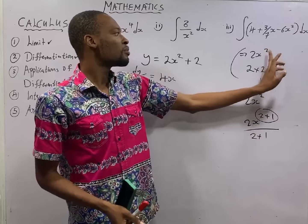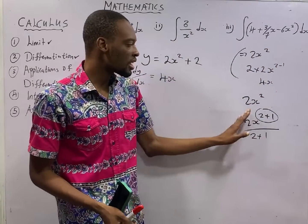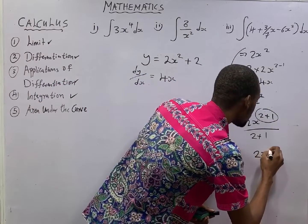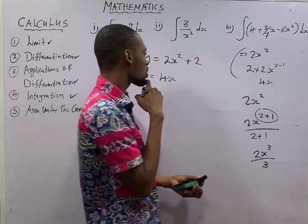For differentiation, multiply by the power. Subtract 1 from the power. So, this is how to integrate. This will give you 2x raised to the power of 3 over 3.